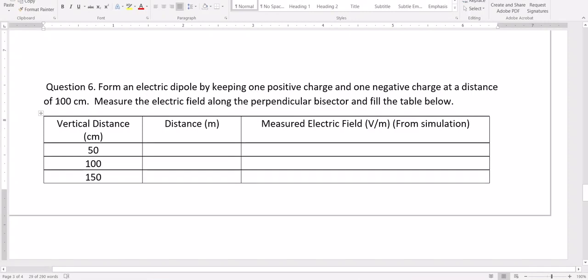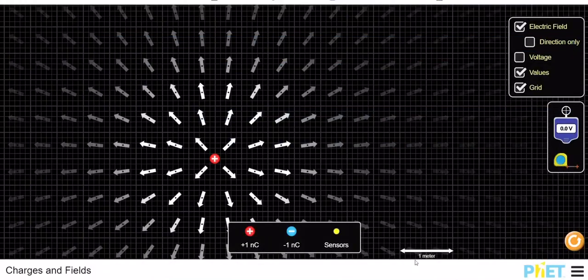If you look at this line, the bigger square represents one centimeter. Take the negative one nanocoulomb charge and place it here.